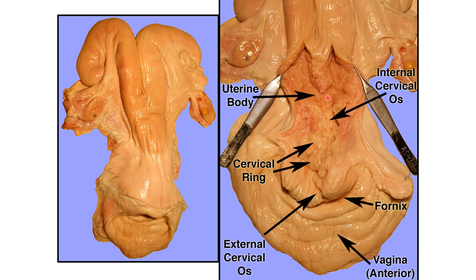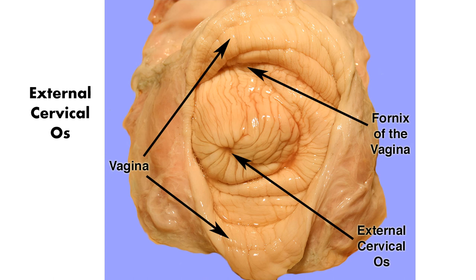In this specimen, we can see the uterine body, the internal cervical os, the cervical rings, and the external cervical os. The vagina and the fornix of the vagina are also visible. The external cervical os is the opening between the cervix and the vagina. The fornix is the pouch formed at the junction of the cervix and the vagina.